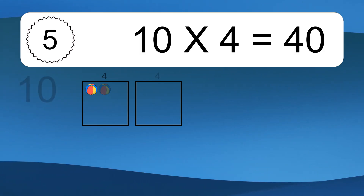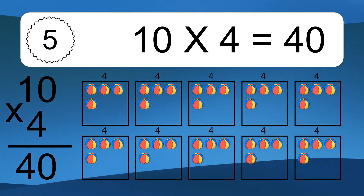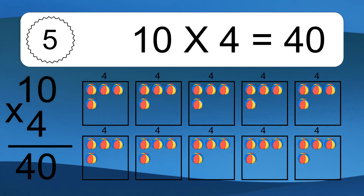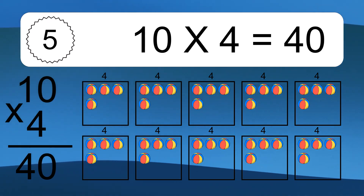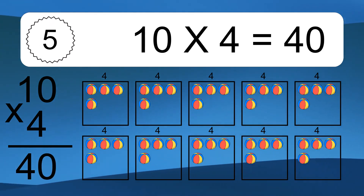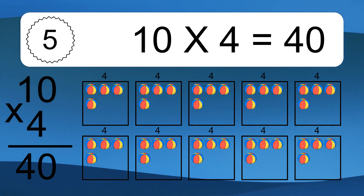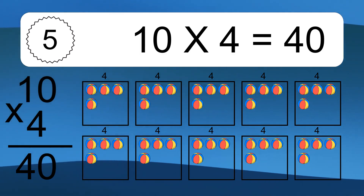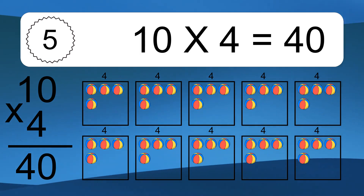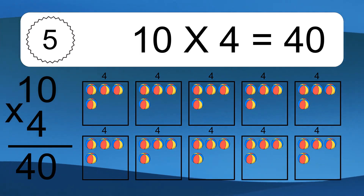Ten times four equals forty. We have ten boxes, and each box has four colorful balls inside. If you count all the balls in all the boxes together, you will have ten times four balls. This equals forty balls.